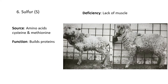The sixth one is sulfur. The source is amino acids — that's the only way they can get sulfur in. Specifically, it forms part of the amino acids cysteine and methionine. The animal will have to eat protein to get in these amino acids. The function is to build proteins — amino acids are the building blocks of proteins. If there's a deficiency of these amino acids or sulfur, you won't have any muscle — there will be a lack of muscle.